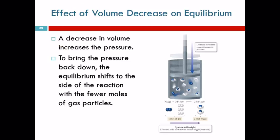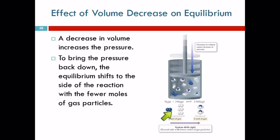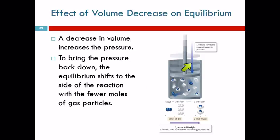Let's look at this chemical reaction: one nitrogen molecule plus three hydrogen molecules — that's a total of four moles of gas as reactants — react to form two moles of ammonia as products. So the reactants have four moles of gas and the products have two moles of gas. If we push down on this piston and decrease the volume, we are increasing the pressure.